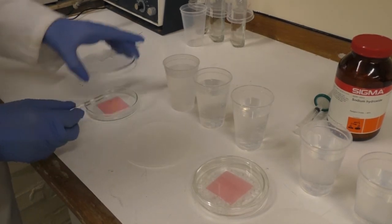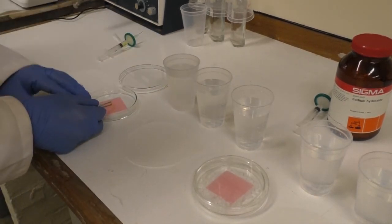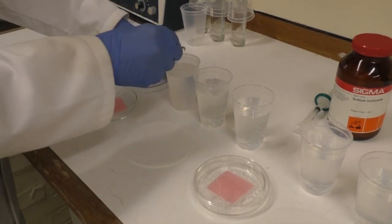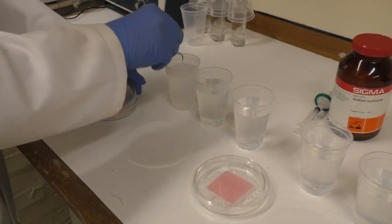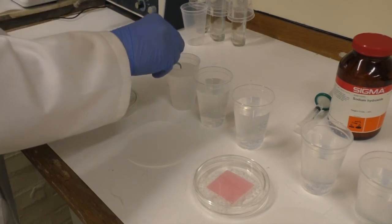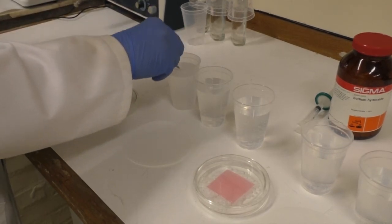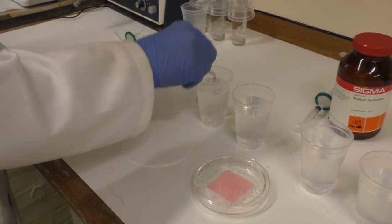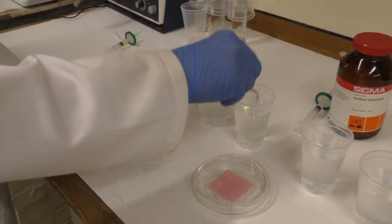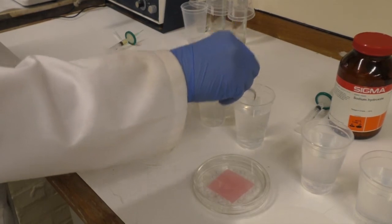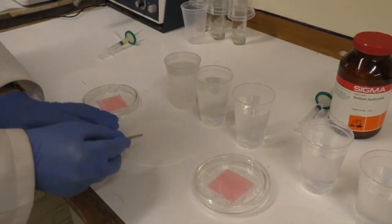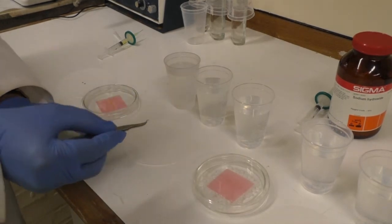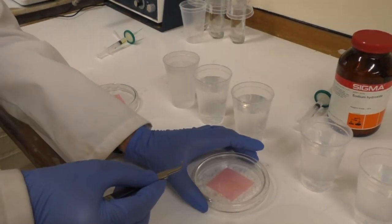Once the 20 minutes was up, I would remove the grids and wash them with 10 dips in distilled water. I'll do that three times. And then gently dry the grids, and then move them to the next stain, which in this case is the lead citrate.